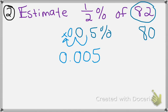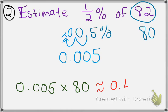So all that we do is we multiply. We're going to be multiplying 0.005 times 80. And when you multiply that out, you get your answer of approximately 0.4.